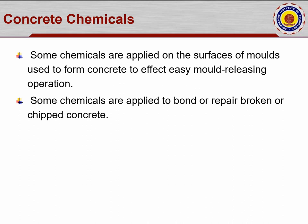Chemicals are applied on mold surfaces depending on the climatic conditions, type of elements, and type of concrete. In earlier times, oils or leaves were applied to make the surface smooth and ensure good contact with the formwork. Nowadays chemicals are available for this purpose. Additionally, some chemicals are applied as bonding agents to repair broken or chipped concrete, for cases where spalling occurs in a structure.